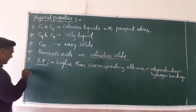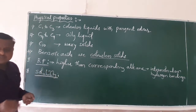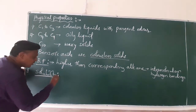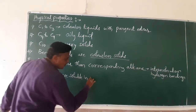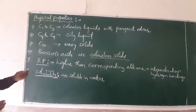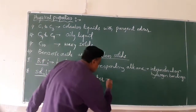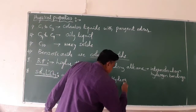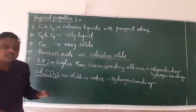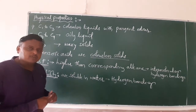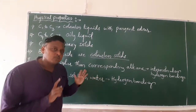The next property is solubility. The lower carboxylic acids are soluble in water. For example, acetic acid and formic acid can easily dissolve in water due to hydrogen bonding. However, higher carboxylic acids are only partially soluble in water due to their hydrophobic character.